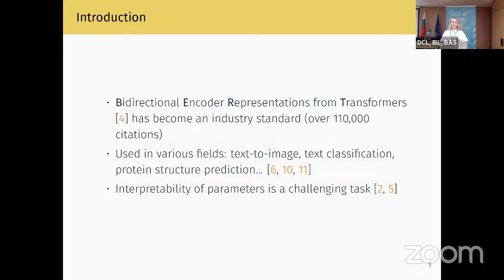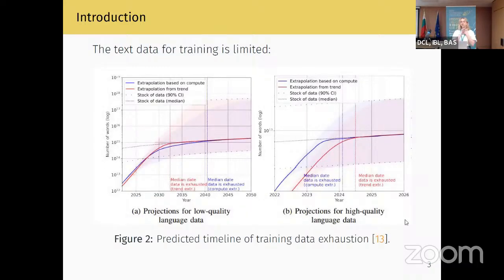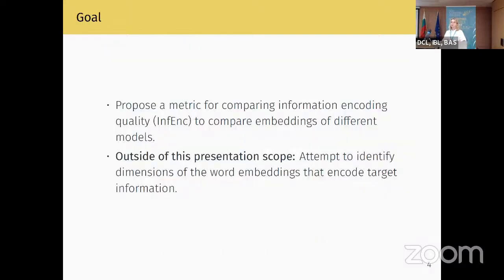However, BERT, being a small large language model, is still a large language model, and interpretability of parameters of such models is still a challenging task. I also want to direct your attention to several trends prevalent right now in natural language processing. Despite this graph being a very old one — dated 2020 — what we can see is that the number of parameters started exploding around 2019, and right now commercial-level models can have hundreds of billions of parameters. On the other hand, some researchers predict that high-quality training data will be exhausted in the coming decades. With this in mind, we propose to direct our attention to existing models and try to understand better what information is encoded in the word embeddings.